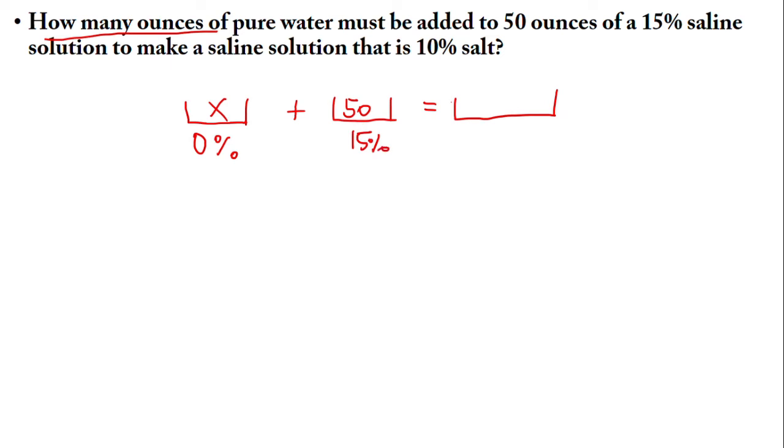We have here the resulting solution which is 10%, but inside the bigger box we just have to add the volumes, the smaller volumes. So that is x plus 50. And the next thing is easy, we just have to make our equation. So here, x times zero percent plus 50 times 0.15 is equal to (x plus 50) in parenthesis multiplied by 0.10.